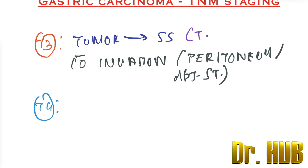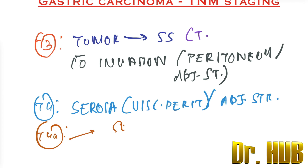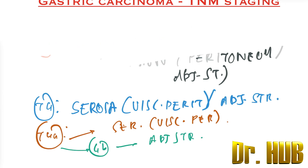To recap: T3 is a tumor that penetrates the subserosa connective tissue with no invasion of the visceral peritoneum or adjacent structures. T4 means the tumor invades the serosa — that is, the visceral peritoneum — or adjacent structures. T4a means invasion of the serosa (visceral peritoneum), and T4b means invasion of adjacent structures.